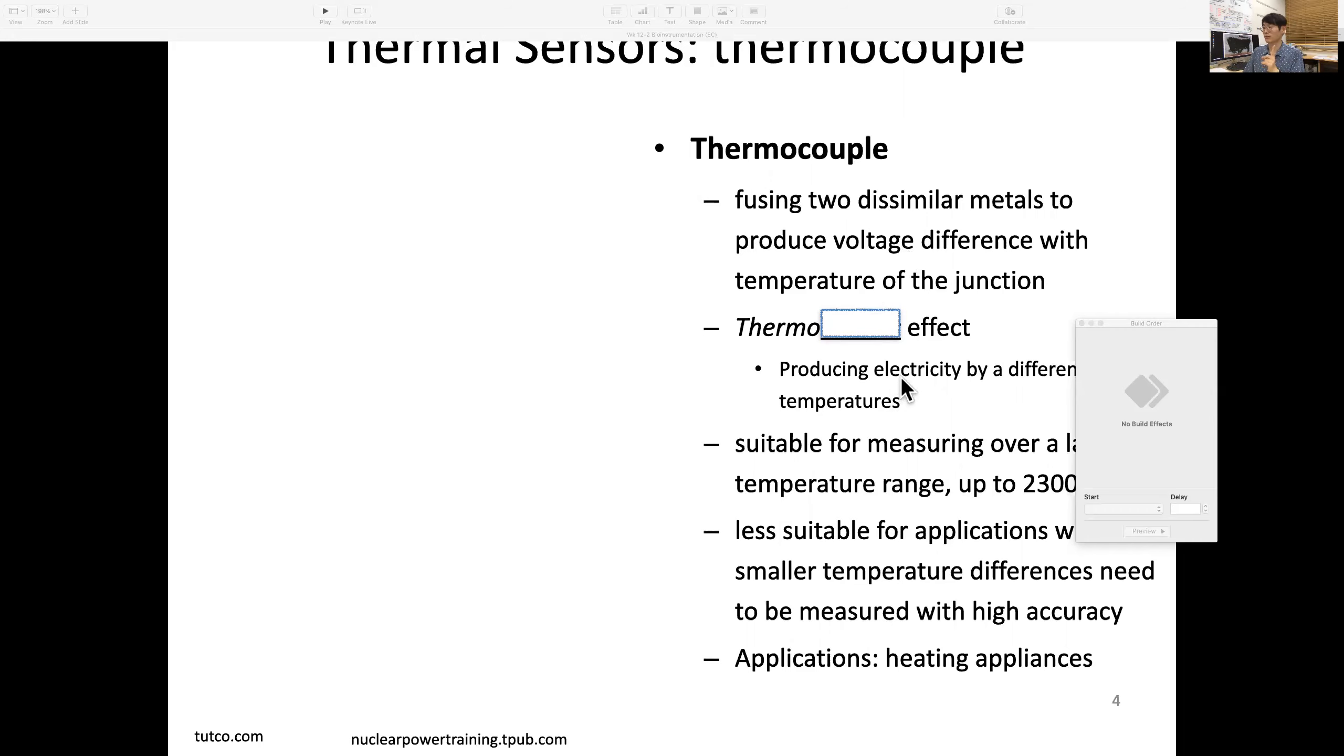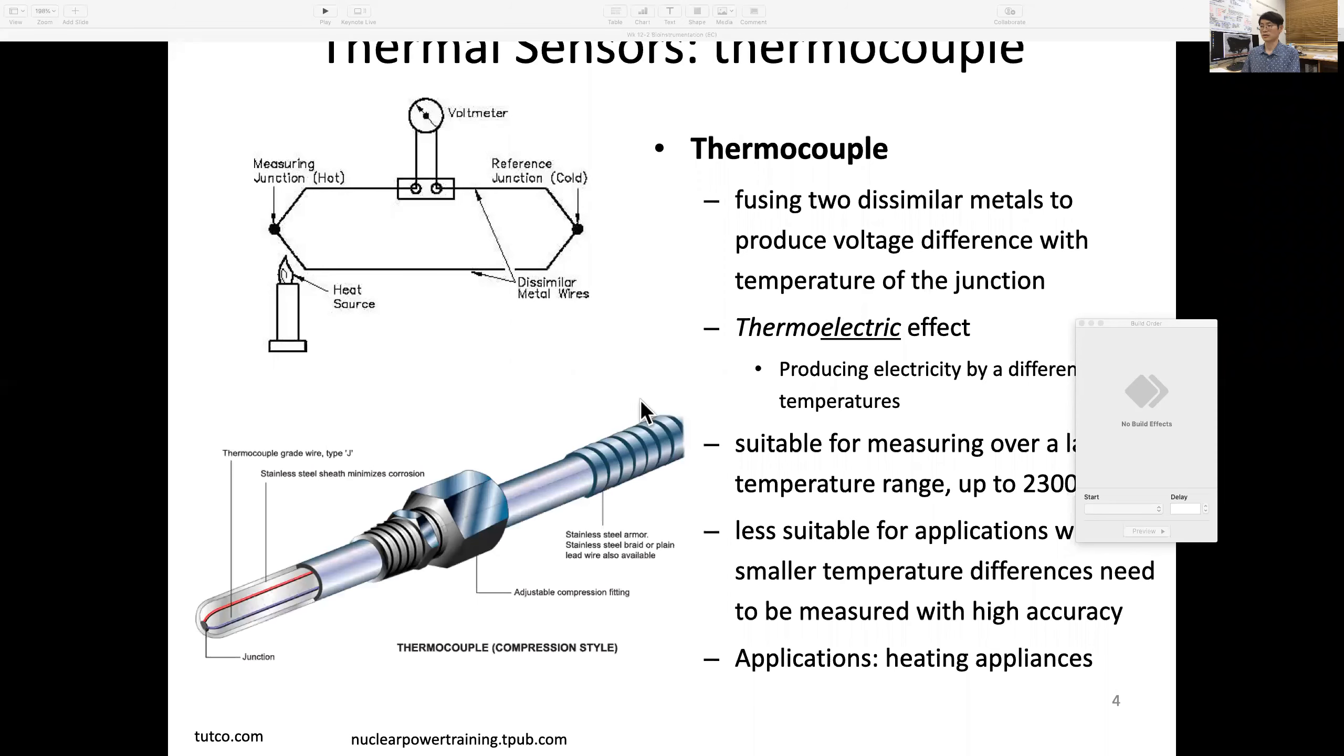It looks almost like this: two dissimilar metal wires with a junction. When you apply heat compared to cold, this generates a voltage difference. An industrial product looks like this.